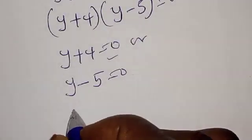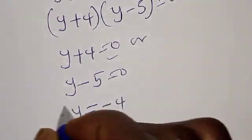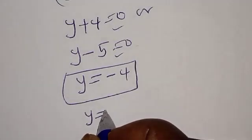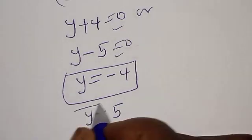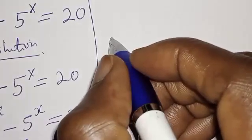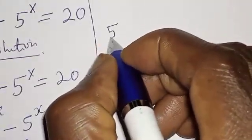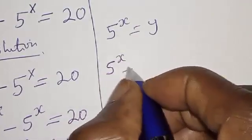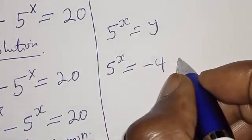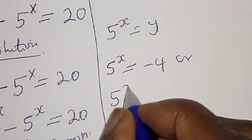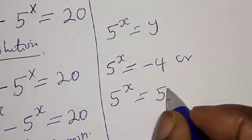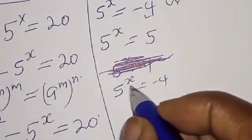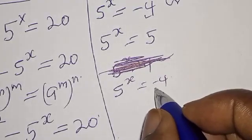Therefore y plus 4 equals 0 or y minus 5 equals 0, giving y equals minus 4 or y equals 5. Since y equals 5 raised to power x, from the first case 5 raised to power x equals minus 4. Since 5 raised to power x cannot take a negative value, we reject this case.